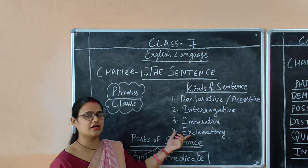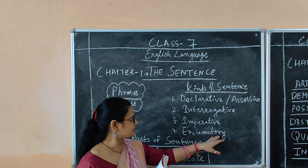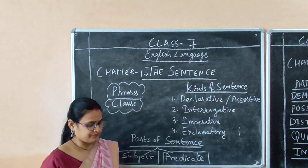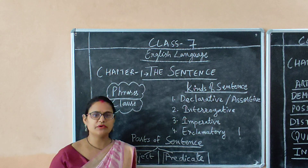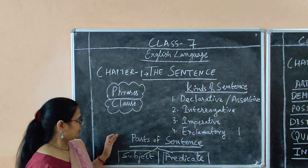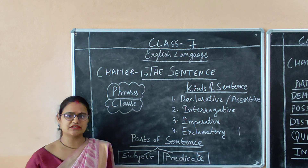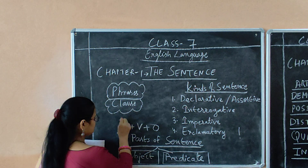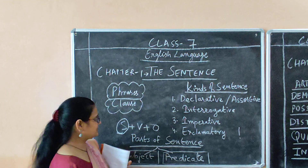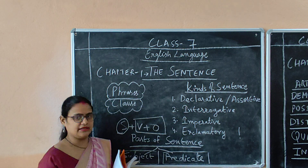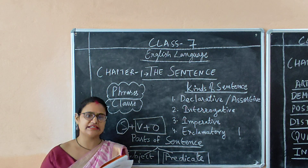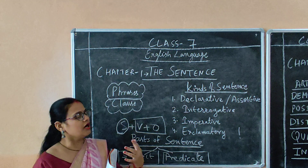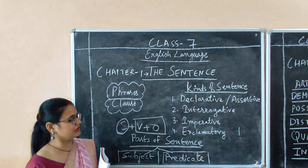Now let us discuss the last type: exclamatory. When there is the word exclamatory, it means that sentence must have an exclamation sign at the end. These things are very common for you — you have already studied this part. So, parts of a sentence: there are only two parts. In a sentence, subject plus predicate — the subject is the doer of the sentence, and the rest of the portion we always include as the predicate. A sentence is mostly divided into two parts: one is your subject, another is your predicate. Predicate can be defined in other terms also, but that will be explained to you in your next classes.